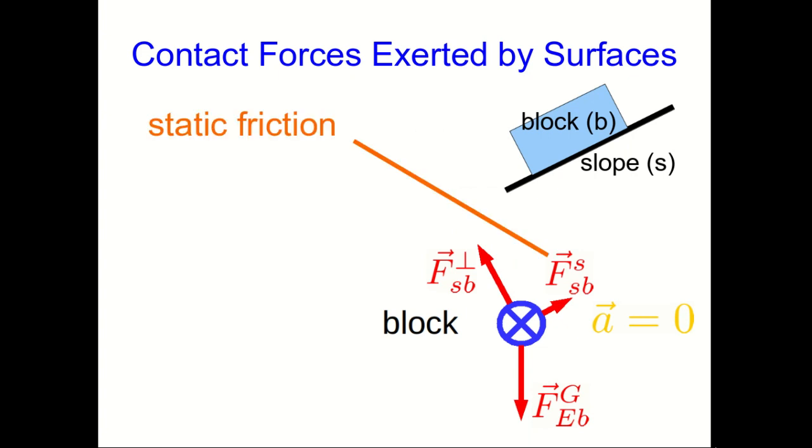Now, that piece that's parallel to the surface is a frictional force. In this case, we would call it a static friction. Static just means nothing's moving, and nothing is moving here, and so that's why we call it a static friction. In particular, it's that the block is not slipping on the slope, and that's what tells us that this is a static friction. That other force I'm going to call a perpendicular force, because it is perpendicular to the surface that exerts it.